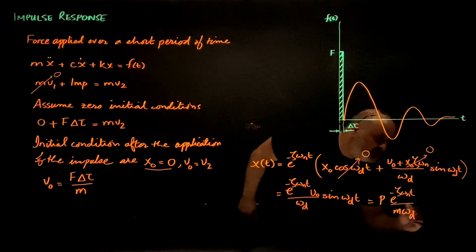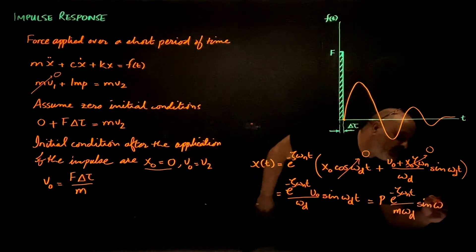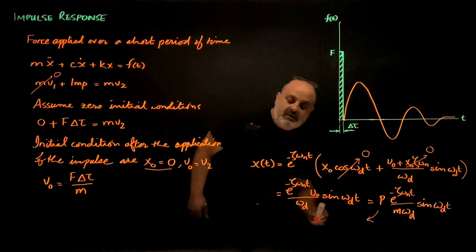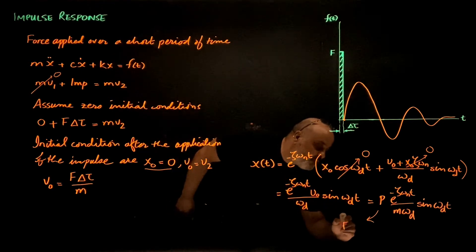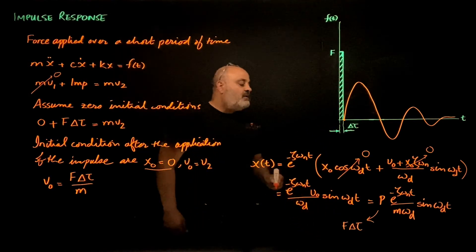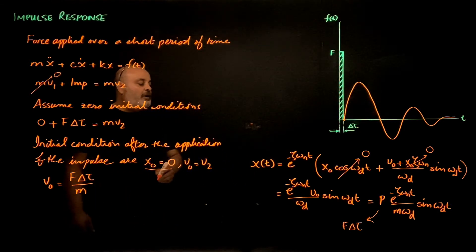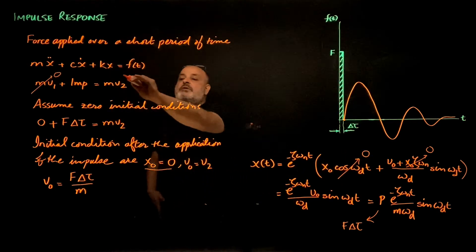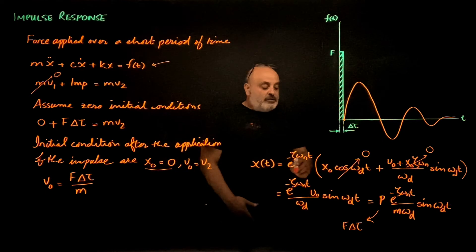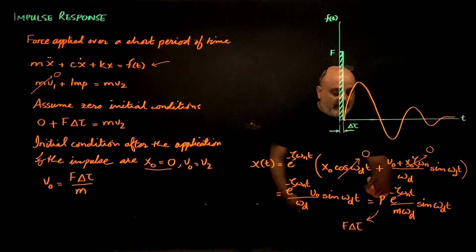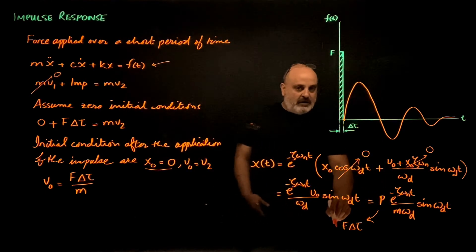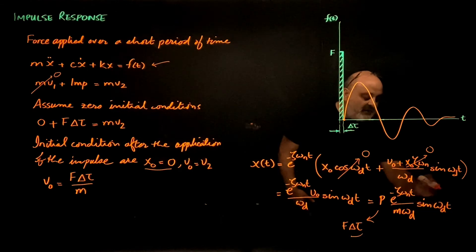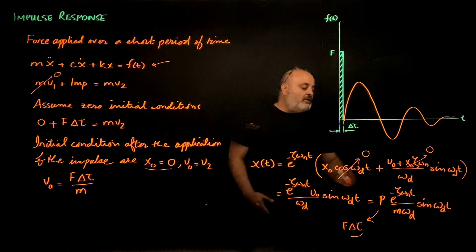So for any impulse input to a single degree freedom system in this form, the output is the magnitude of the impulse, which is the force times the duration of the force, times this function.